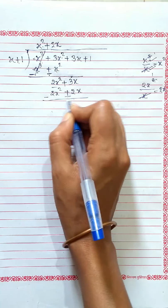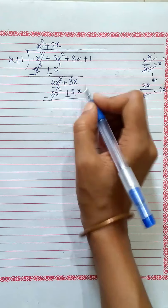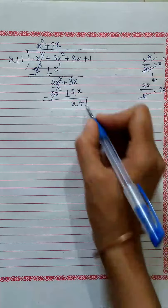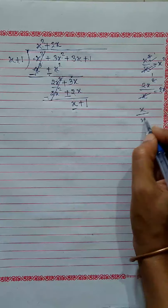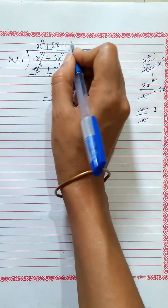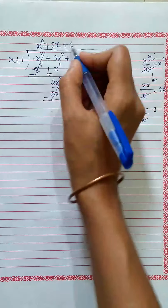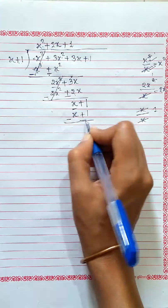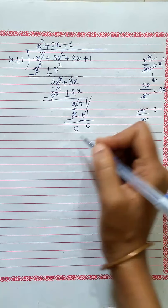Again, change the sign. Here positive and negative cancel. Then 3x minus 2x gives x, plus 1. Again, first term is x, divisor first term is x. Divide: answer is 1, so we write plus 1. Multiply 1 by x plus 1: 1 times x is x, and 1 times 1 is 1. Sign is changed. Cancel — 0, 0.